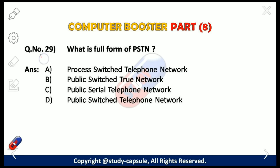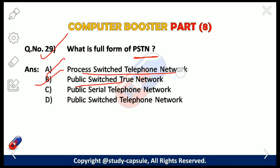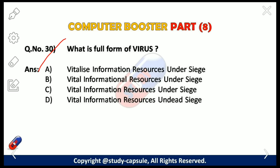Our 29th question: what is the full form of PSTN? The answer is D — Public Switched Telephone Network. Our 30th and last question: what is the full form of VIRUS? The answer is C — Vital Information Resources Under Siege.